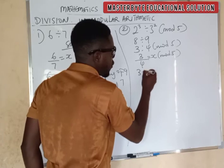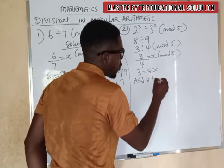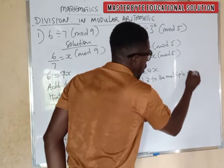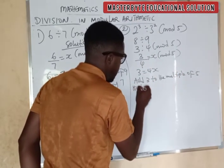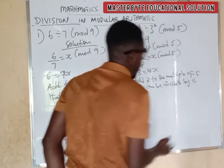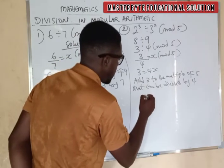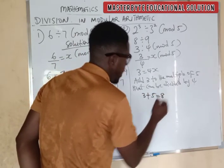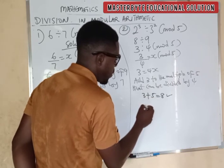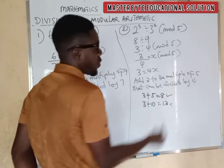Now, if you cross-multiply, you are going to have 3 equal to 4x. The next thing you do: add 3 to the multiple of 5 that can be divided by 4. If you add it, 3 plus 5 gives us 8 — can 4 divide 8? Yes, which is correct. Let's try another multiple: 3 plus 10 gives us 13 — it cannot. So let's go with 8.